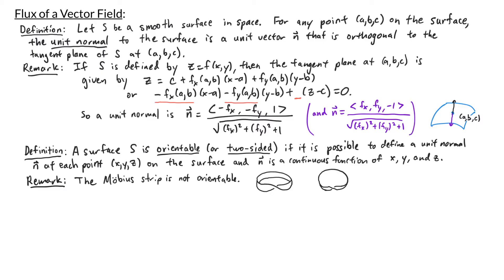Looking at the Mobius strip from the top, if we pick a unit normal at the top point, as we keep going around the unit normal points outwards. As we work our way down, the unit normals flip over to the other side. Notice that as we approach the original point the vectors are pointing inwards, but at the original point the unit normal points outwards. So there is a jump from pointing inwards to pointing outwards, meaning the function defining the unit normal is not continuous. This example shows that non-orientable surfaces exist, but what we're going to be working with will always be orientable.